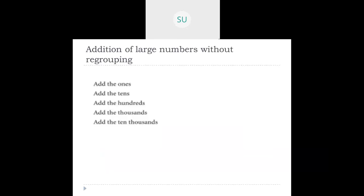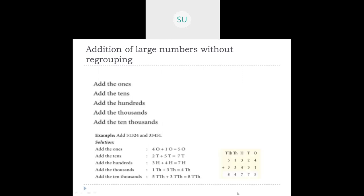Then we saw addition of large numbers without regrouping. The steps are: first, write the numbers vertically in their place value tables. Then we start adding from the ones place, then move to the tens place, then hundreds, then thousands, and finally the ten thousands place. We also saw various examples of this.